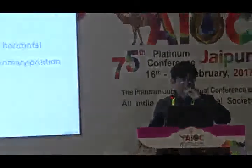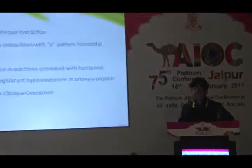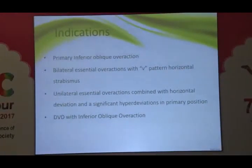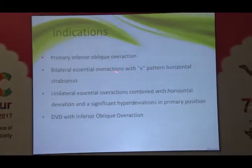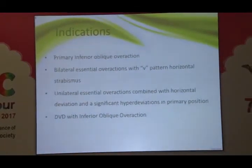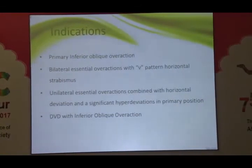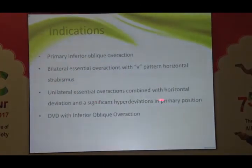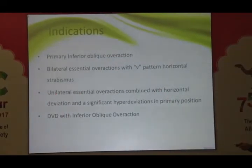I have no financial disclosures to make. We will quickly see the indications and then go to the surgical anatomy and some videos. The indications, narrowed down, are whenever you see an inferior oblique overaction, you should be weakening it: primary inferior oblique overaction, superior oblique palsy, secondary inferior oblique overaction with V patterns combined with horizontal deviation, and DVD with inferior oblique overactions secondary to superior oblique palsy.